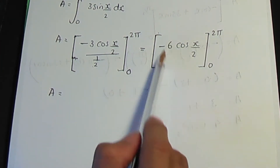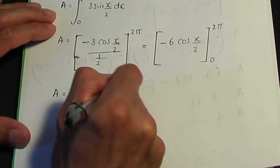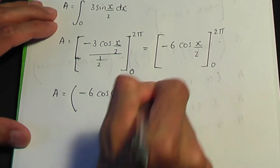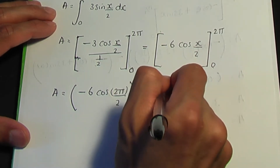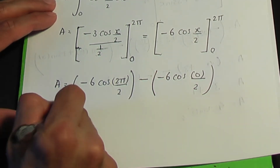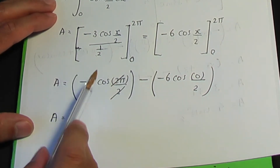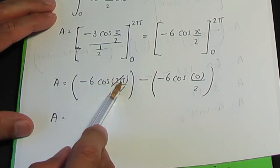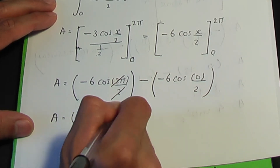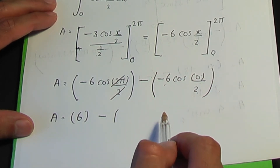Substituting the upper limit two pi first: minus 6 times cos(2pi/2), which is cos(pi). Cos of pi is a standard result equal to minus one, so minus one times minus six is plus six. Then subtracting the lower limit: minus 6 times cos(0/2), which is cos(0), a standard result equal to one. One times minus six is minus six.